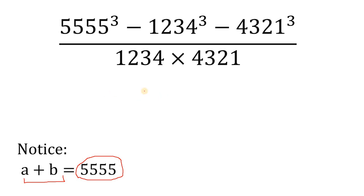And now, our expression becomes something like this: (a+b)³ because this is 5555, a is 1234, b is 4321. This looks like (a+b)³ minus a³ minus b³, all over ab.